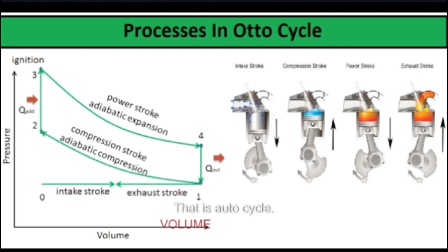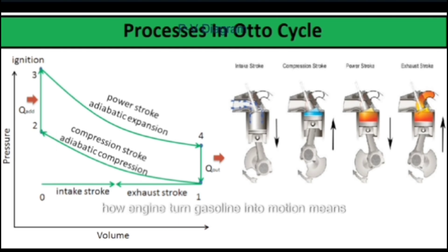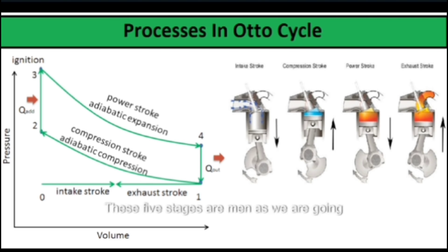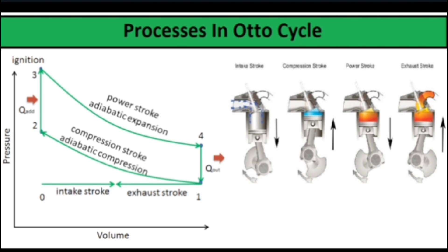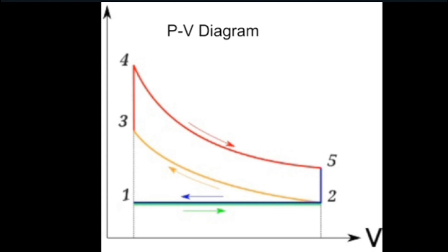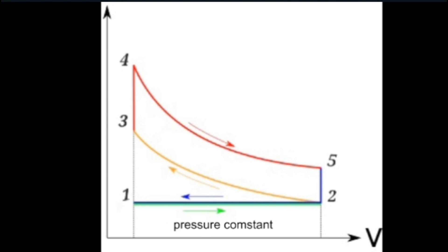Now we will move to our main topic, which is the Otto cycle. What is the Otto cycle? The Otto cycle describes how an engine turns gasoline into motion — it tells us how an internal combustion engine works. We just spoke about five stages in the Otto cycle. We are going to study these five stages using a graphical method. As we can see, there is volume on the x-axis and pressure on the y-axis, so we also call it the Otto cycle PV diagram. From point one to two, there is an inlet process where volume increases in the cylinder but the pressure remains constant.